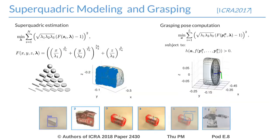Our approach reconstructs an object model and computes a grasping pose by using superquadric functions. Superquadrics are the generalization of quadric surfaces. Once a single and partial point cloud of the object is acquired with robot stereo vision, we look for the superquadric that best fits the point cloud.